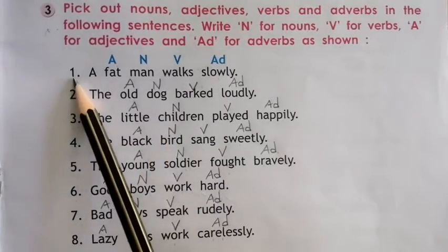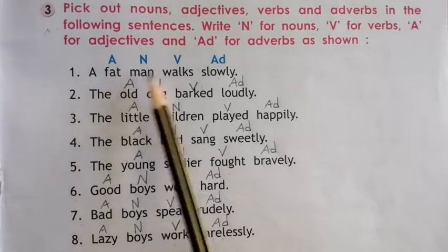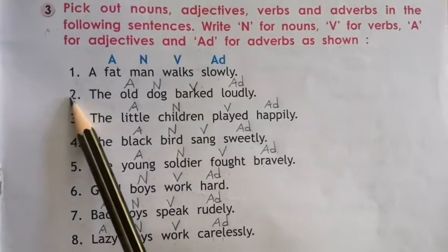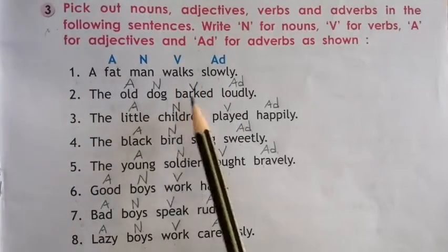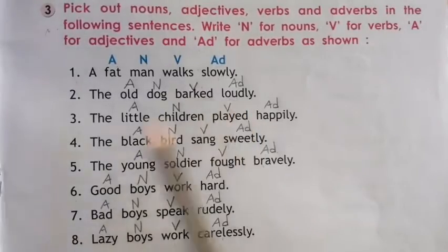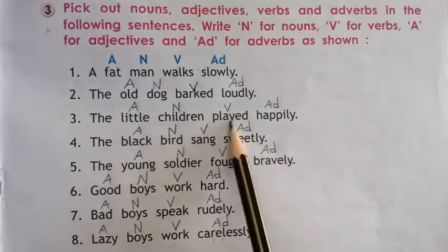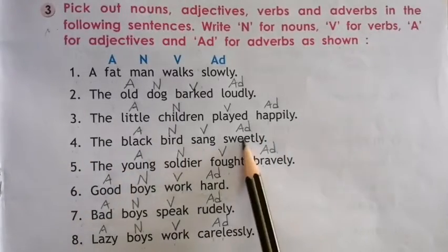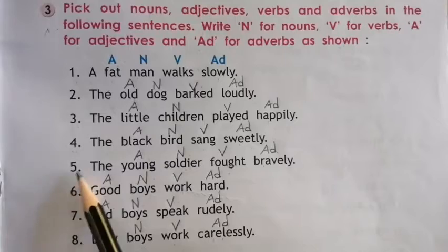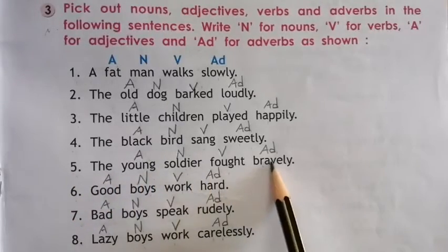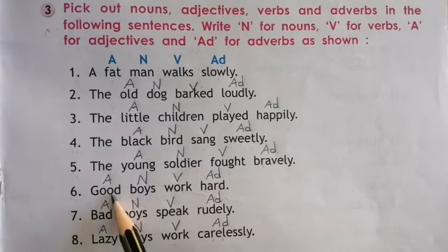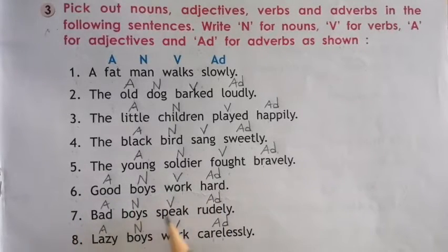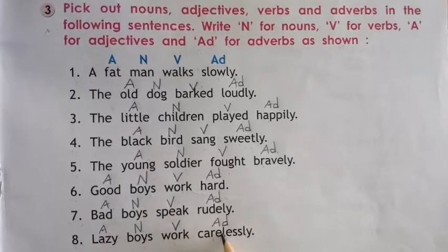Let's read these sentences. 1. A fat man walks slowly. 2. The old dog barks loudly. 3. The little children played happily. 4. The black bird sang sweetly. 5. The young soldier fought bravely. 6. Good boys work hard. 7. Bad boys speak rudely. 8. Lazy boys work carelessly.